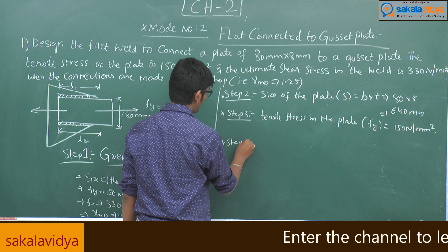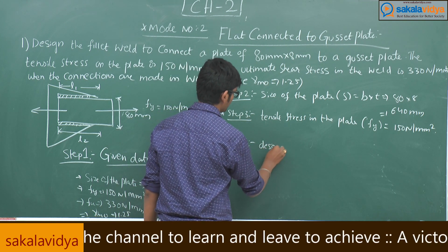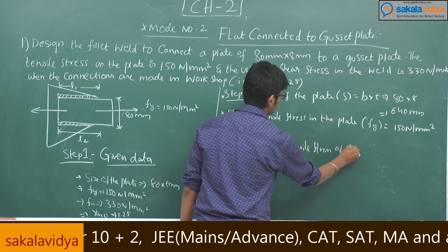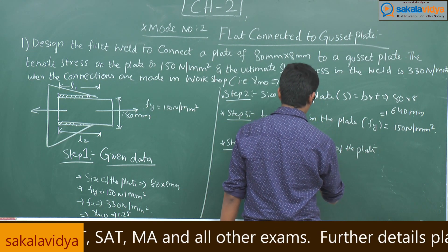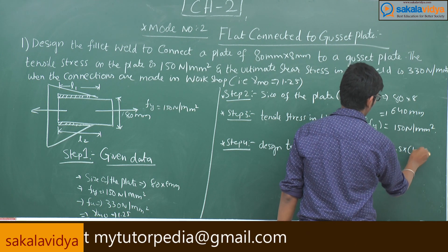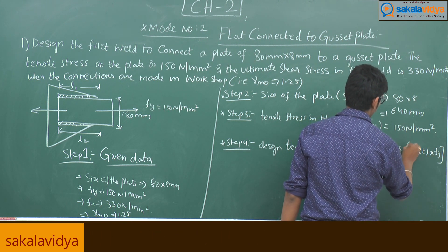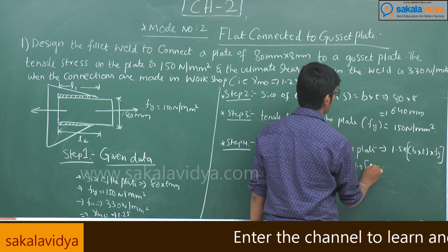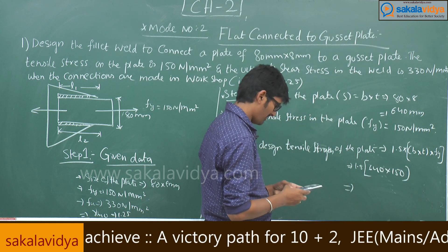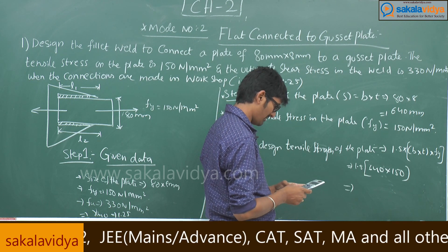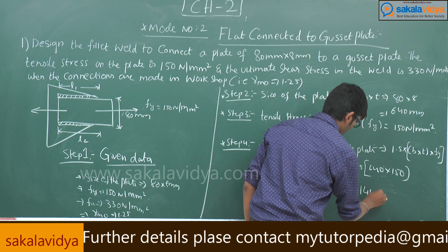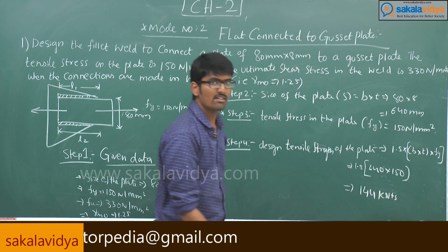Step 4: Design tensile strength of the plate = 1.5 × B × T × Fi = 1.5 × 640 × 150, divided by 10³. That gives a design tensile strength of 144 kilo Newtons.